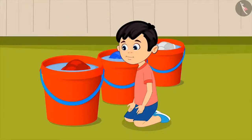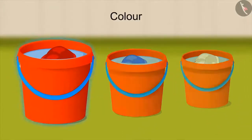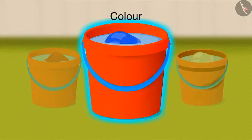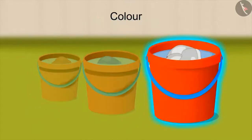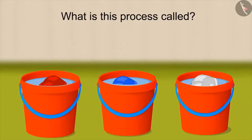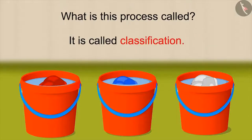In this way, on the basis of the characteristic of clothes — that is, on the basis of colour — Chotu has classified and made different groups. Can you tell what this process is called? Yes, you got it right. It is called classification.